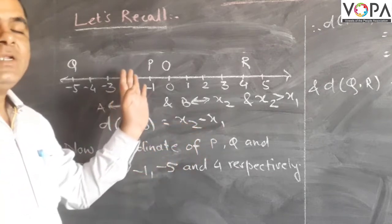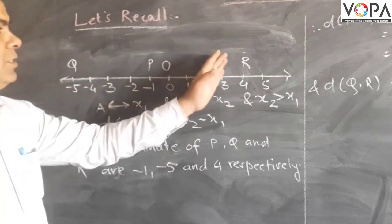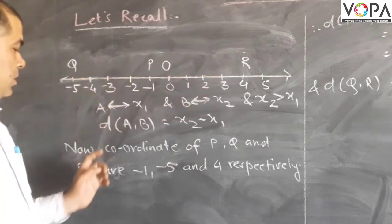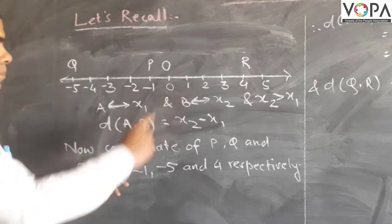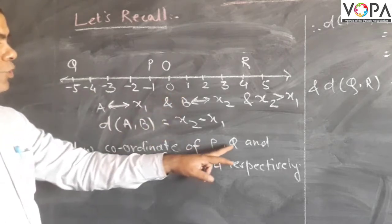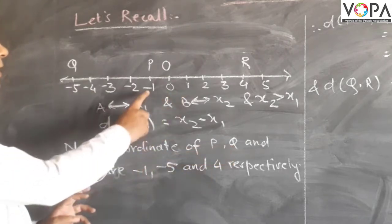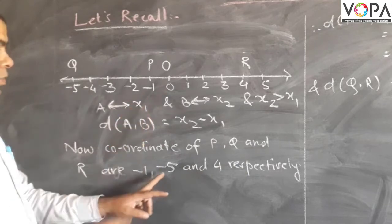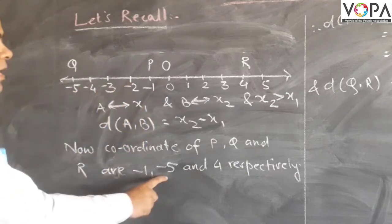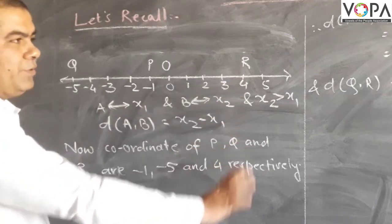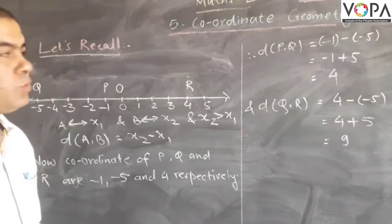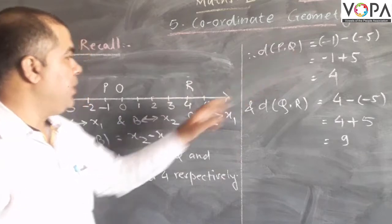Now consider to find the distance between these points. The coordinates of point P, Q, and R are P = -1, Q = -5, and R = 4 respectively. Suppose we have to find the distance between P and Q.